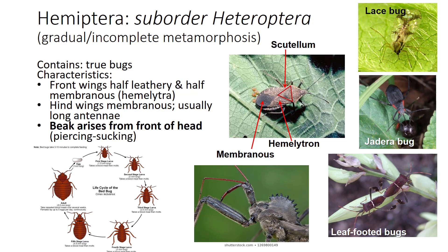All bugs are insects, but not all insects are bugs. True bugs also always have their common name with 'bug' separate from the first part — like 'stink bug,' two words — unlike 'lovebug,' one word, which is a fly. Another characteristic of this group is that they have a little triangle on their back called a scutellum. To distinguish this suborder from others, a special feature is that the beak arises from the front of the head, as seen in this wheel bug.